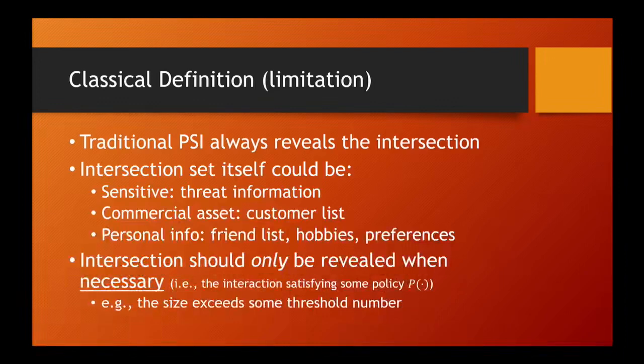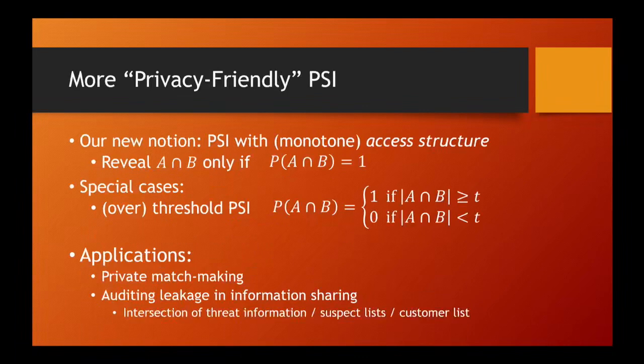We believe that we should only reveal the output when necessary. The definition of necessary could be different in different contexts. In the previous two examples, the condition is based on the intersection size, for example, exceeding some threshold. Perhaps in some other applications, the output should be revealed only if a certain element exists in the intersection. In general, we initiate the study of private set intersection with access structure. We impose an additional requirement over PSI, namely, the intersection should be revealed only if the intersection satisfies certain conditions.